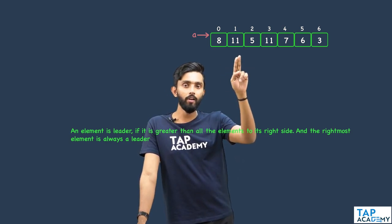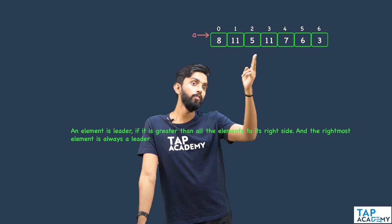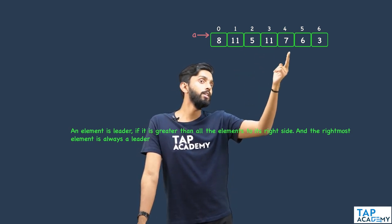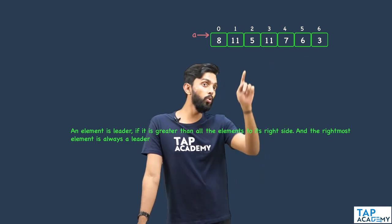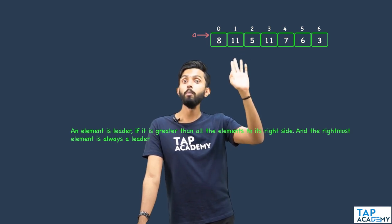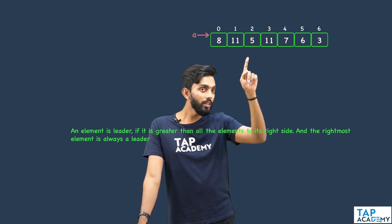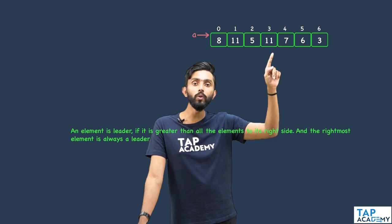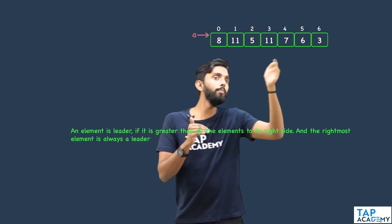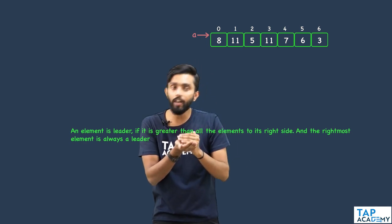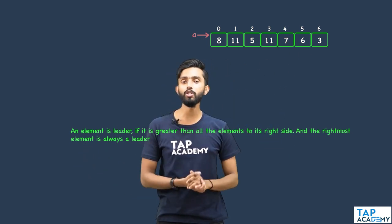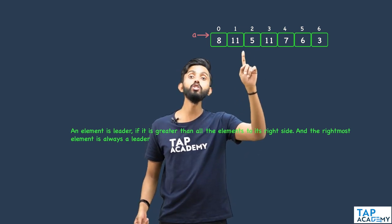Now let's look at 11. Look at all the elements to its right: 5 is lesser, 11 is equal, 7 is lesser, 6 is lesser, 3 is lesser. You might think 11 is a leader, but it is not — because there is an element which is equal to it. There must not even be an element equal to it. So 11 is not a leader.